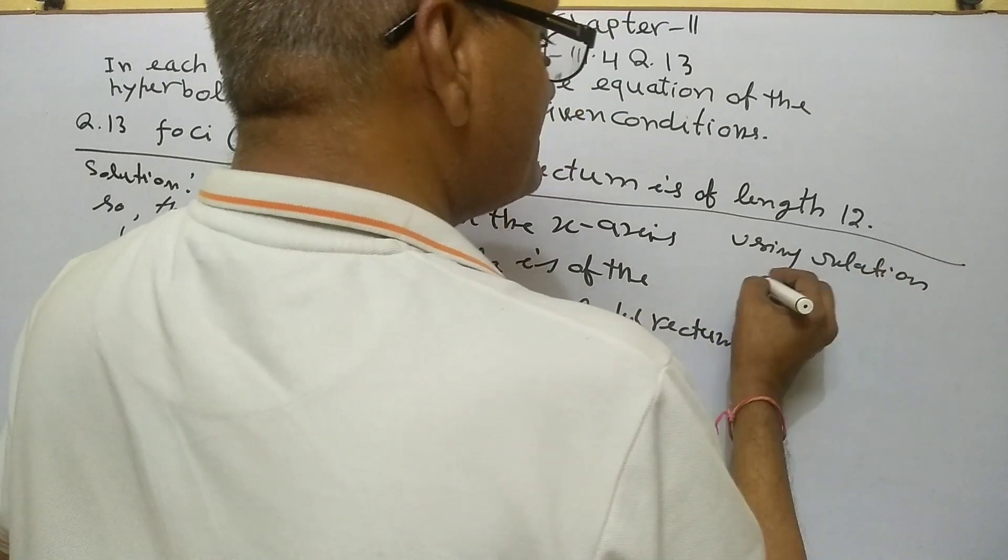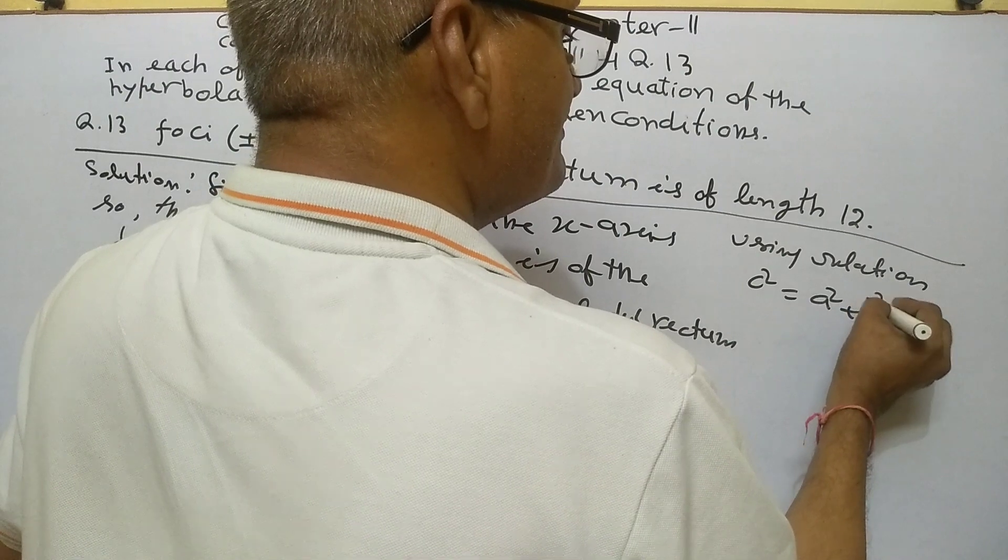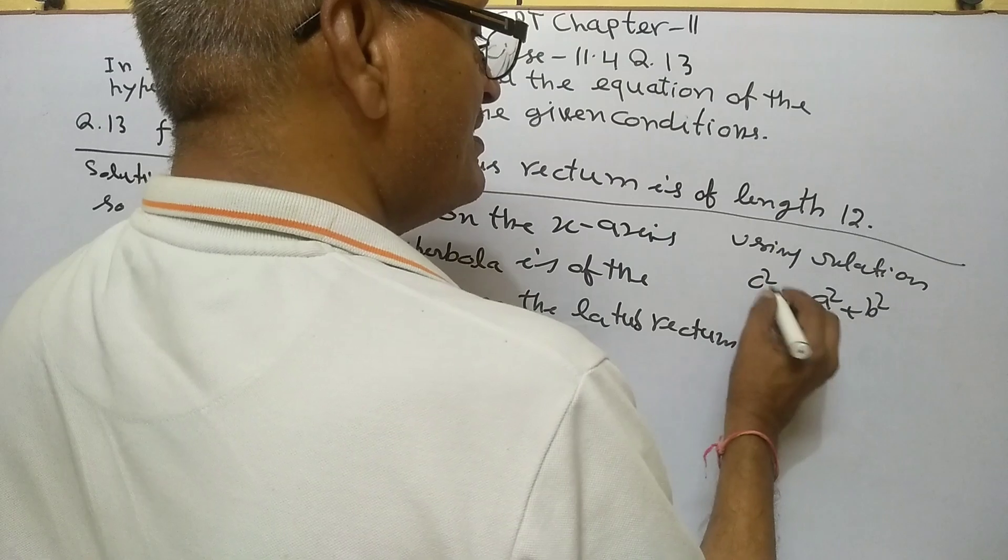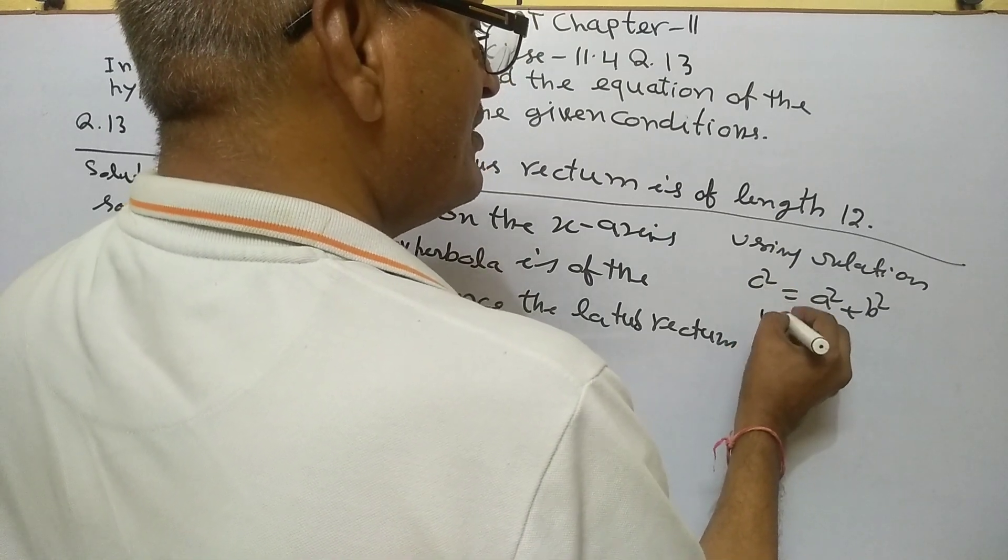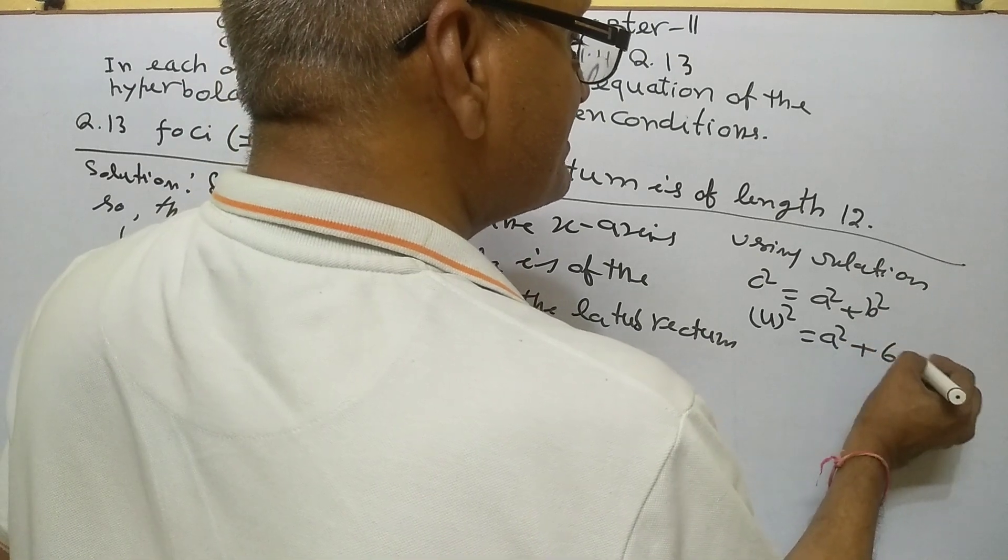Using relation c² = a² + b², we have 4² = a² + 6a.